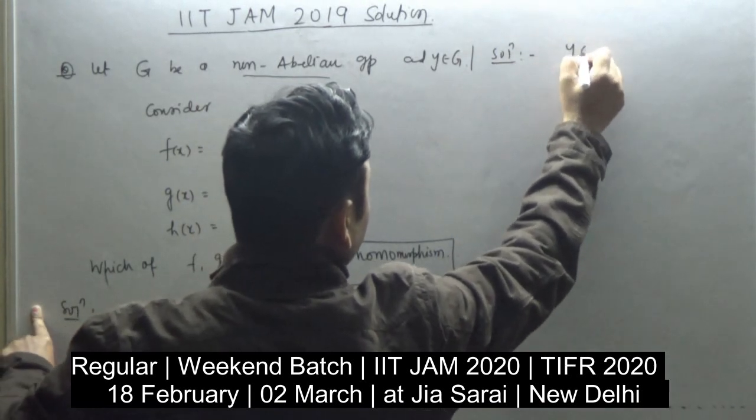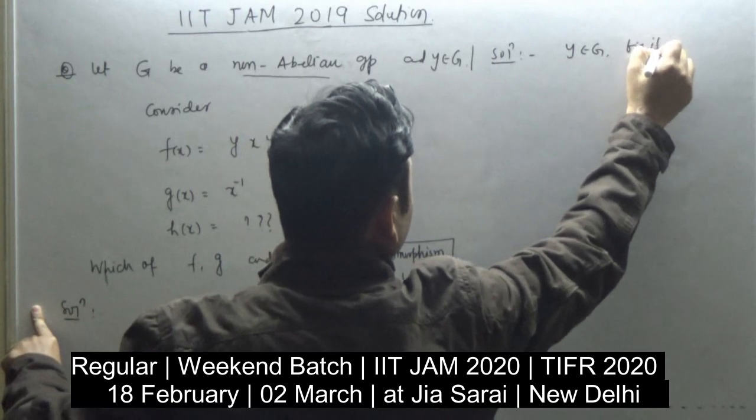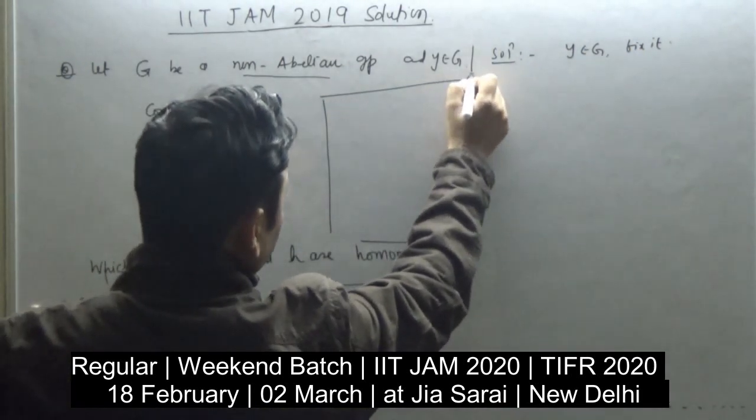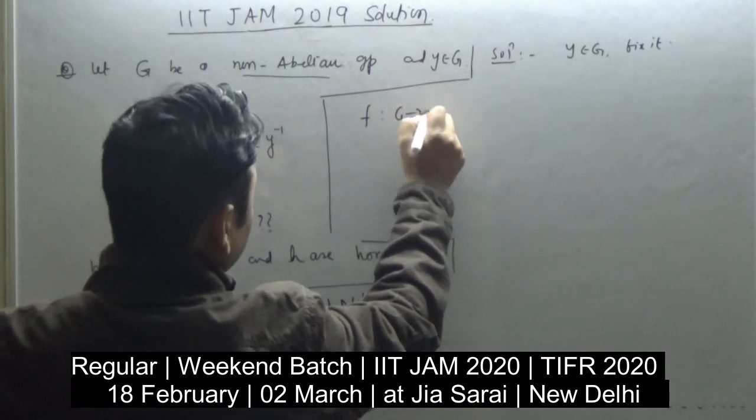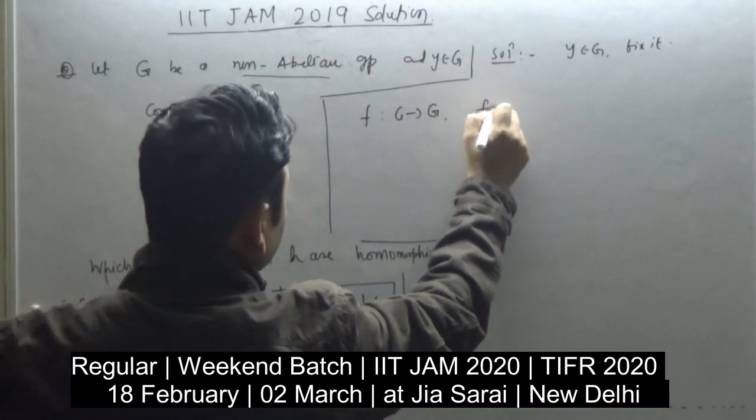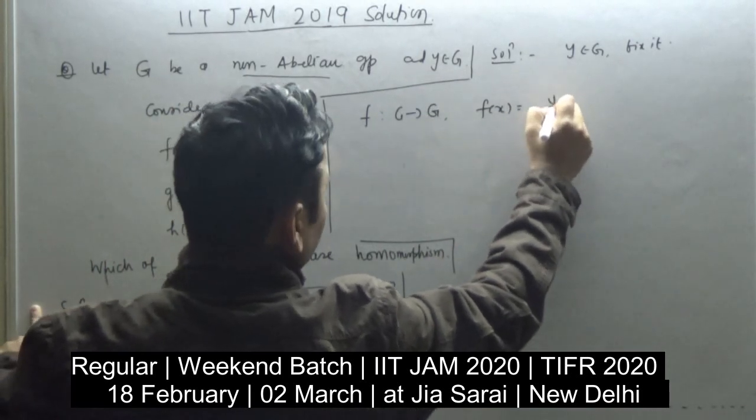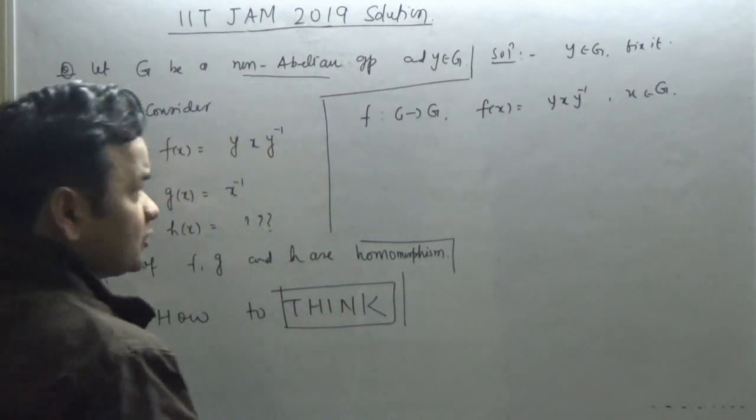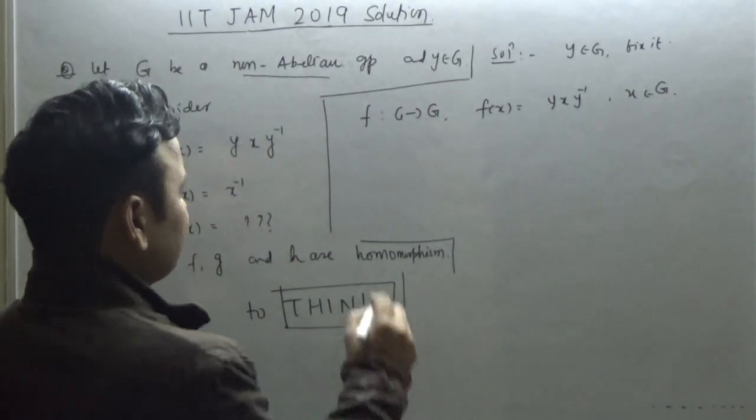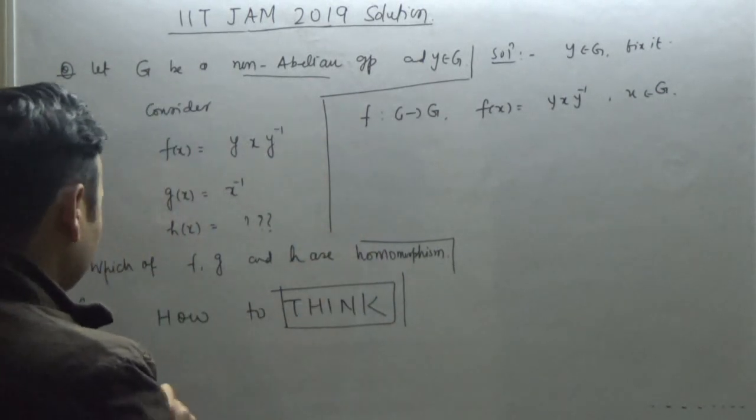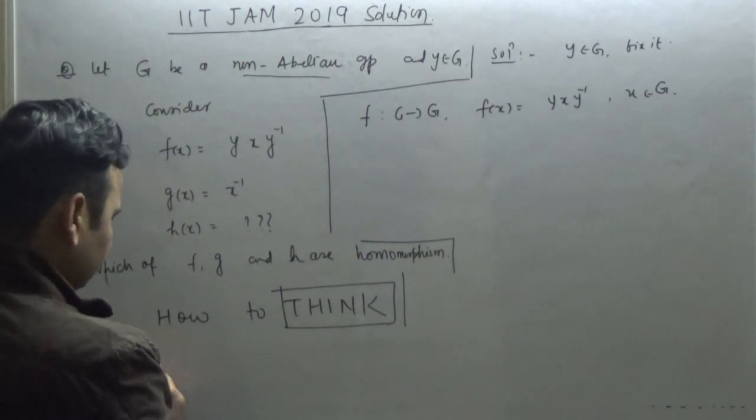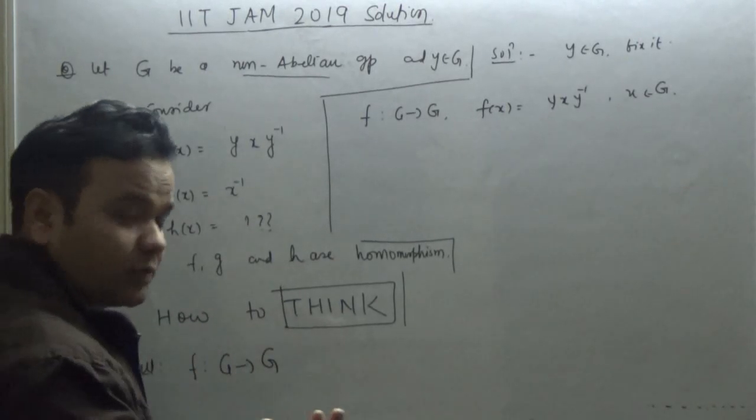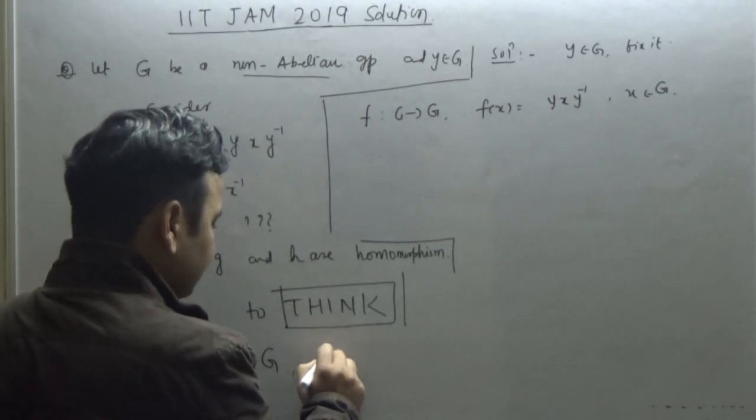You have given y belongs to G and you have fixed it. Now you have defined another function f from G to G where f(x) is equal to yx y inverse. Is this a homomorphism? Recall the definition: f maps from G to G is said to be a group homomorphism if it preserves group operations.